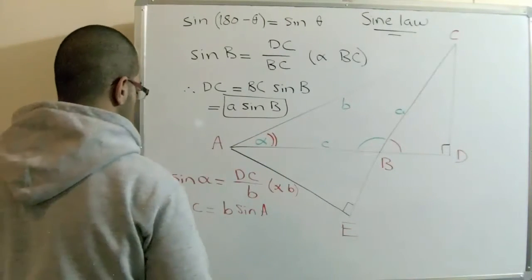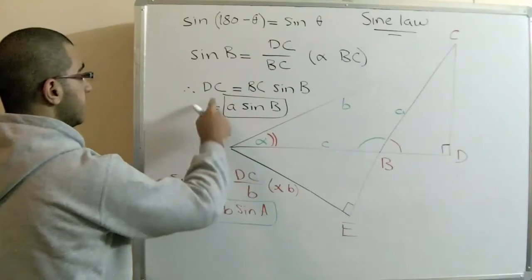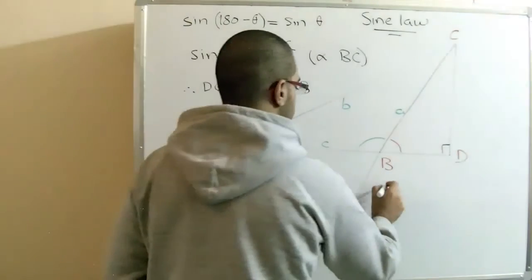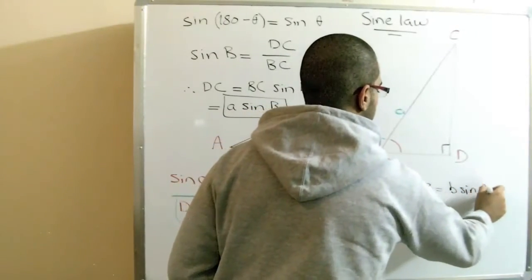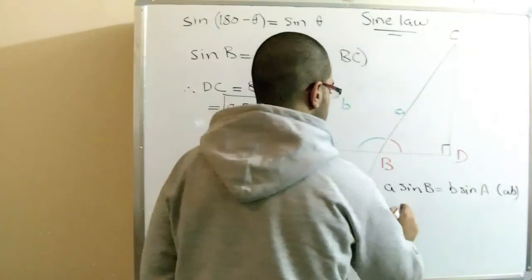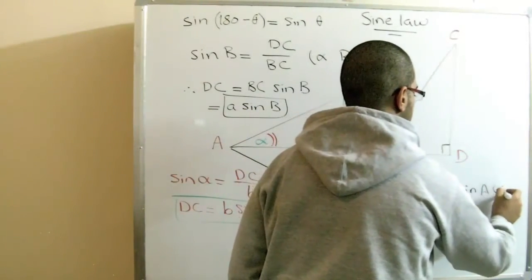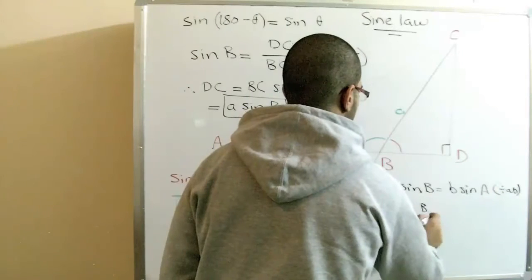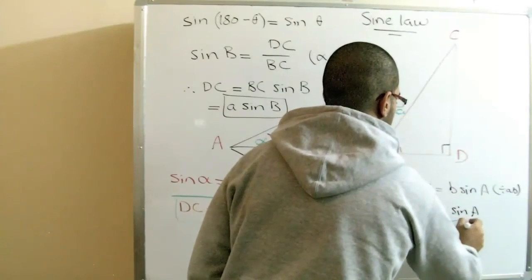DC equals B sin A, and DC equals A sin B. From this, we can conclude that A sin B equals B sin A. And by dividing it with AB, we get sin B over B equals sin A over A.